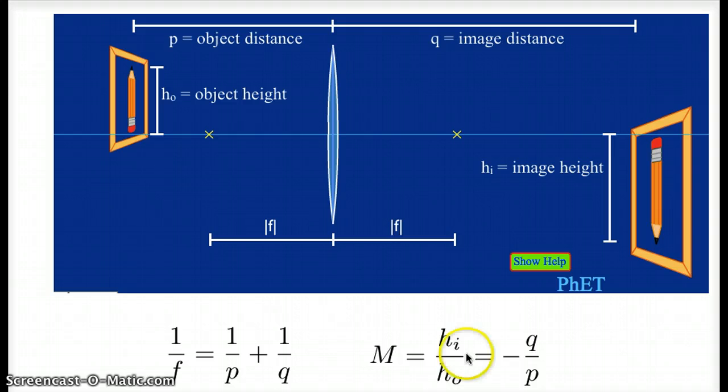So h_i divided by h_o would be a negative number larger than one, larger than one because our image is larger than our object in this diagram. And it turns out that this ratio, image height divided by object height, is also equal to the image distance divided by the object distance. And we said a moment ago that q and p in this diagram are both positive numbers, so we stick a negative sign in front of this.